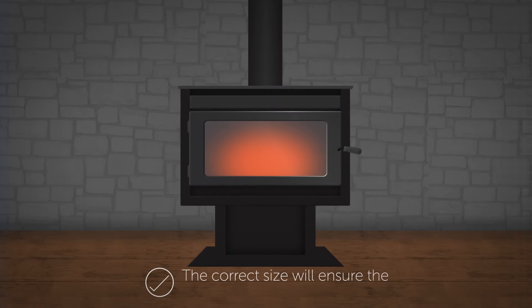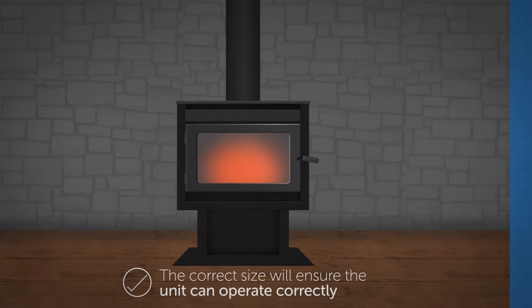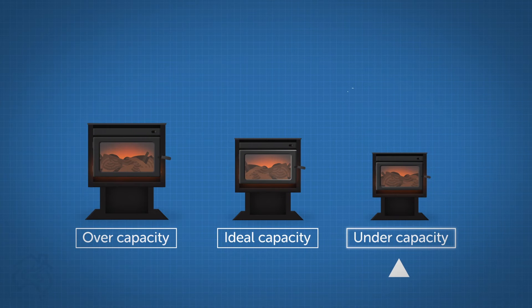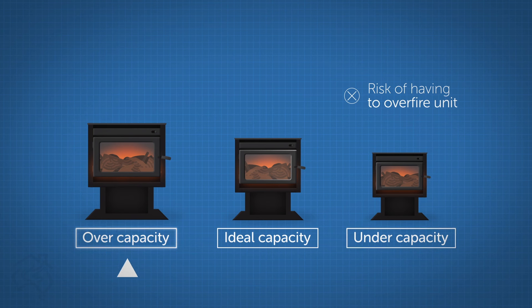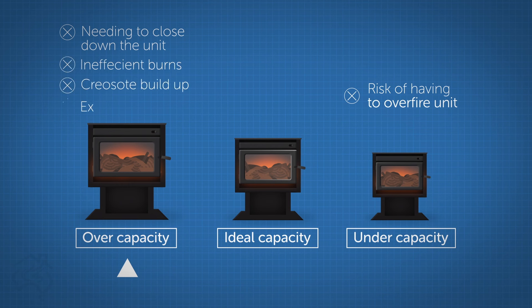Having the correct size unit in your house will ensure the unit can operate correctly. An under capacity unit means you'll run the risk of having to over fire the wood heater to have enough heat. Oversizing can lead to the unit needing to be closed down all the time, creating inefficient burns, dangerous creosote build-up in the flue, and excess smoke.